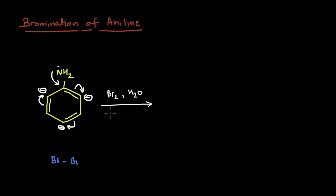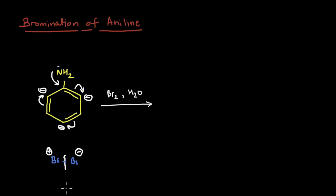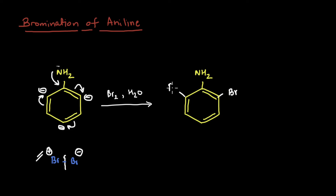The next important thing to note is about the bromine. In this reaction, we use bromine water, which is a polar solvent. It helps easily break the bromine-bromine bond, giving us a bromine with a positive charge - the electrophile - and a bromide with a negative charge. Because NH2 is ortho-para directing, the bromine gets added to both of the ortho positions and the para position.